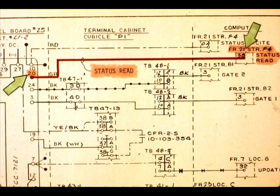Status read goes from pin 20 to computer frame 21, strip F4, terminal 3B. Each DDC controller has its own status read line.